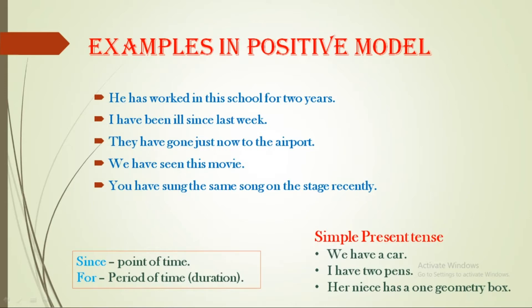Example in positive model: 'He has worked in this office for two years.' Work — worked — worked. 'I have been ill since last week.' Been is the V3 (past participle) of 'be' — be, was, been.